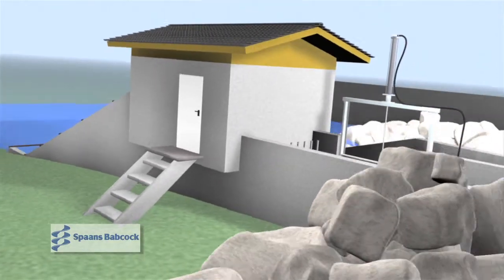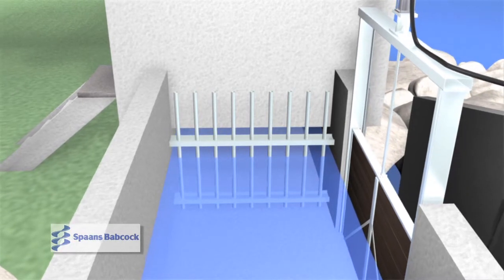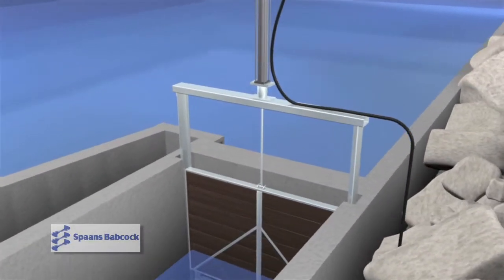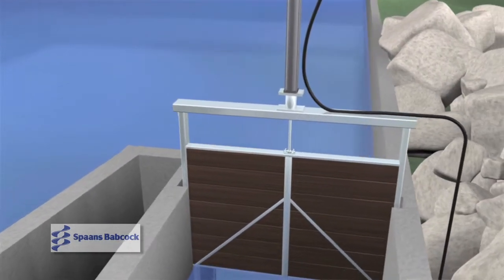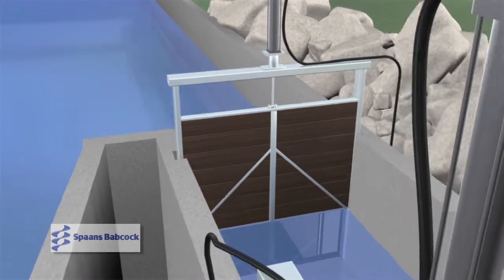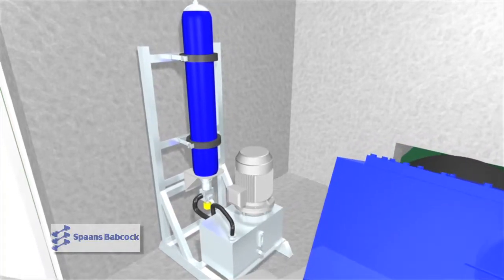The equipment consists of an inlet bar screen for security and to prevent large items entering the screw. A hydraulically controlled inlet gate is used to regulate the flow through the inlet channel and into the screw. A hydraulic power pack is used to provide the power to raise and lower the inlet gate in a controlled manner.